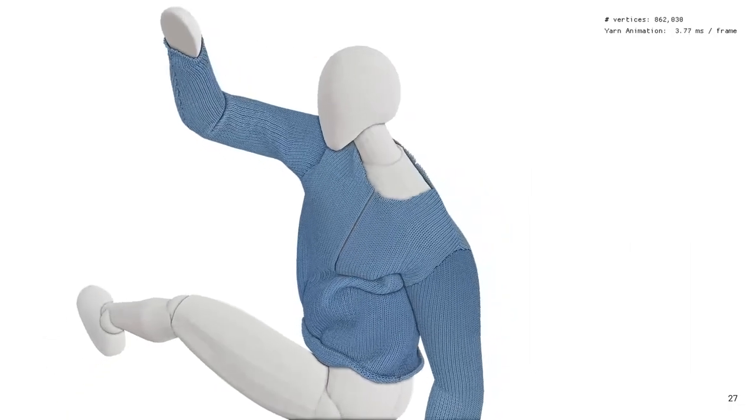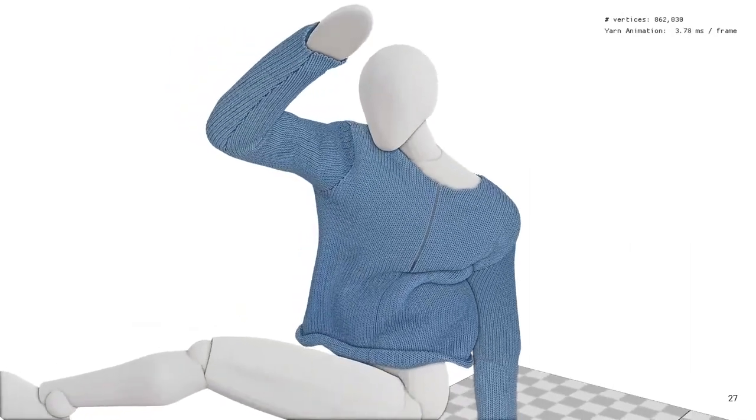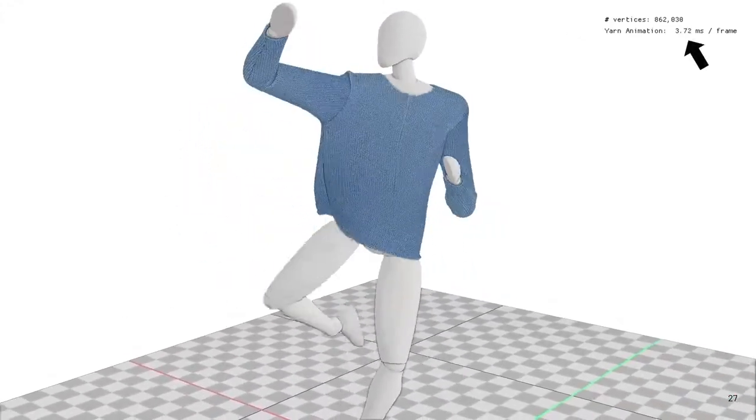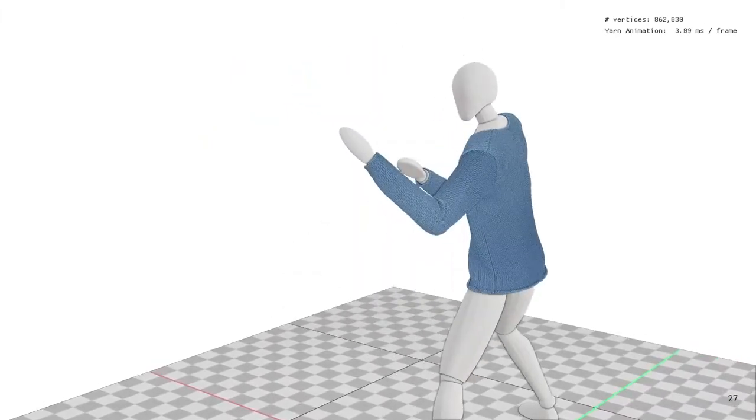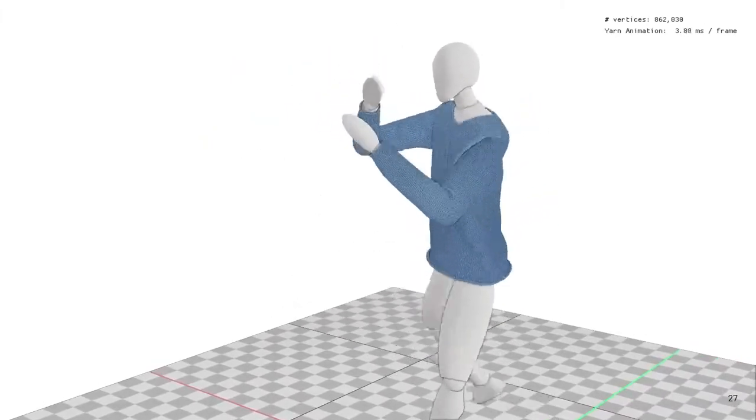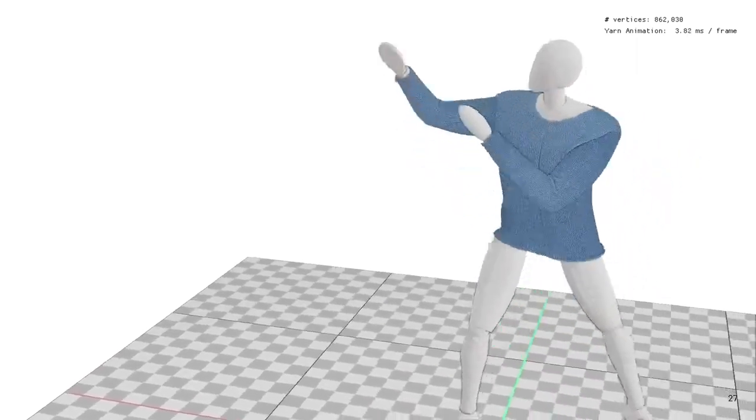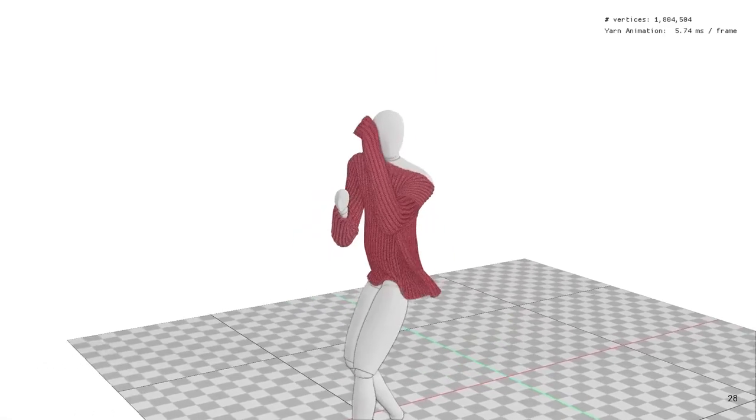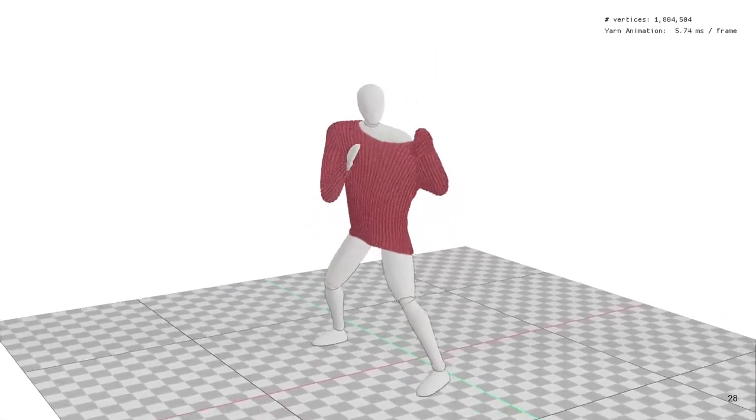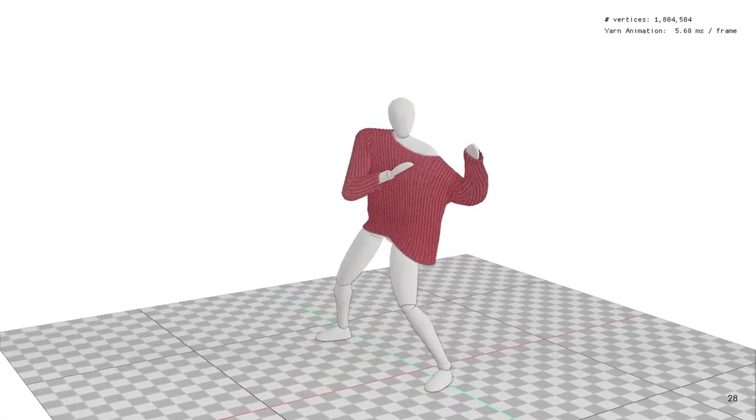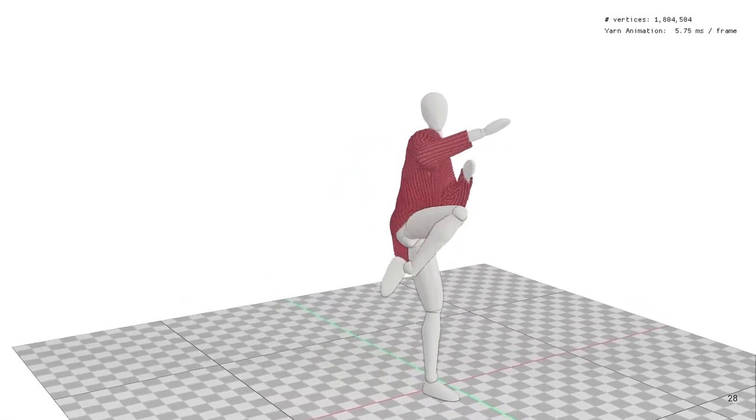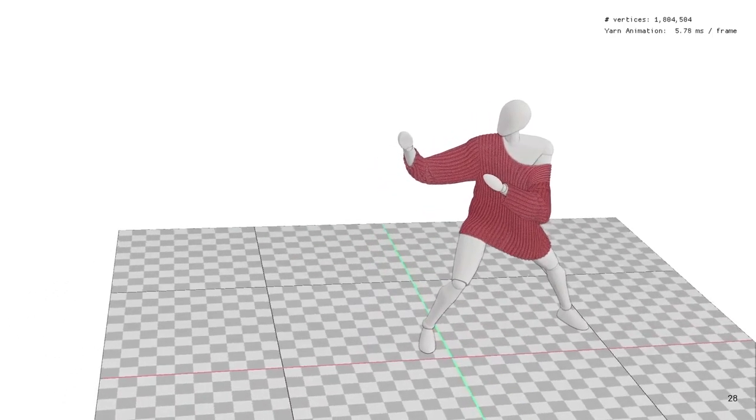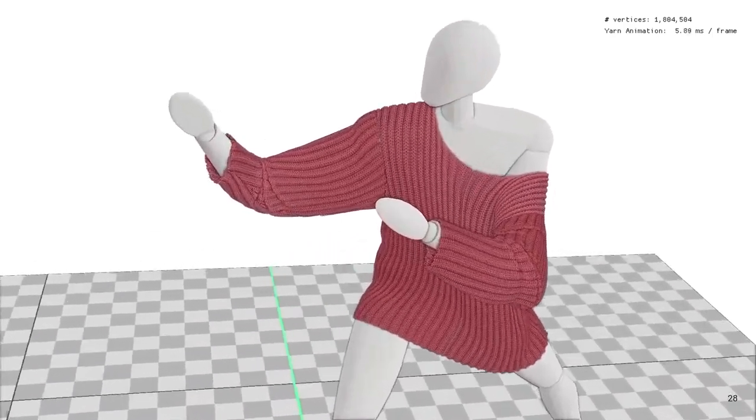Now we'll look at the scalability of our method. In this example of a sweater with over 800,000 yarn vertices, our method runs interactively and only takes around 4 milliseconds per frame, on top of a pre-computed mesh simulation and excluding rendering. Even for 1.8 million yarn vertices, we're still sitting comfortably under 6 milliseconds per frame. And we can zoom in a bit to appreciate the yarn detail more closely.